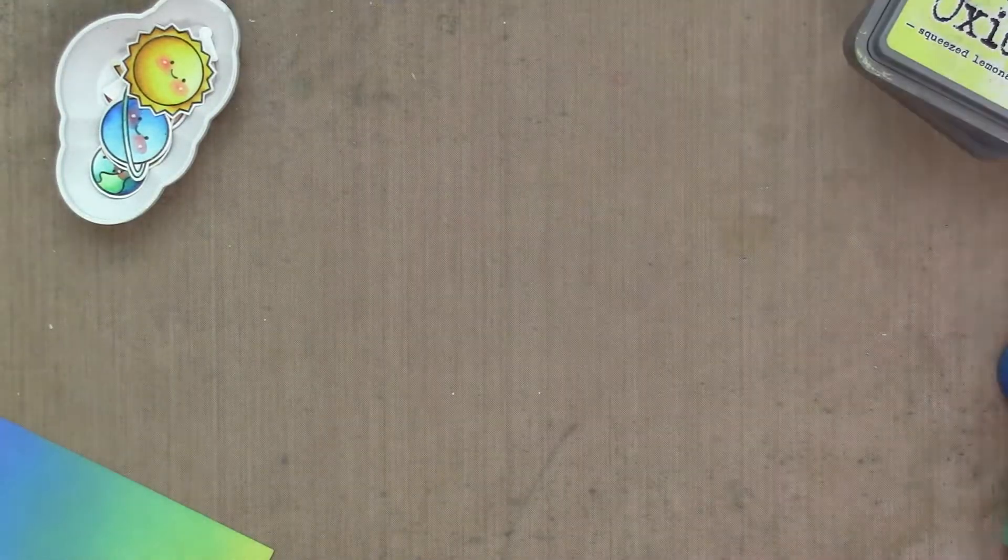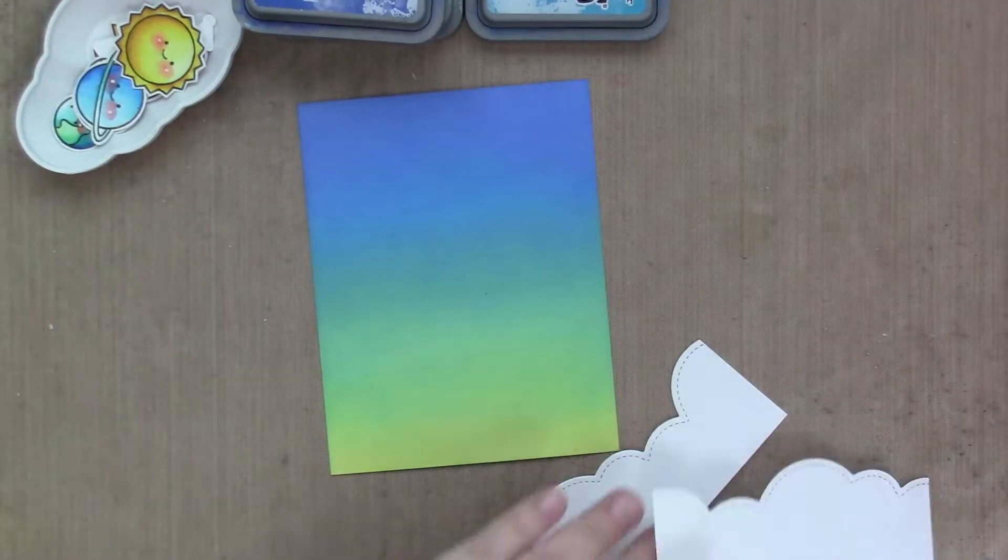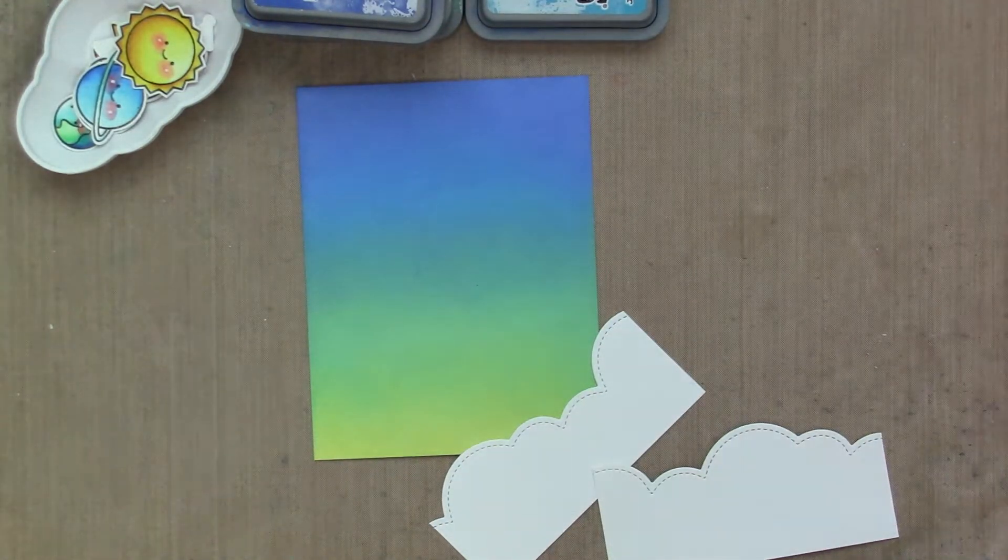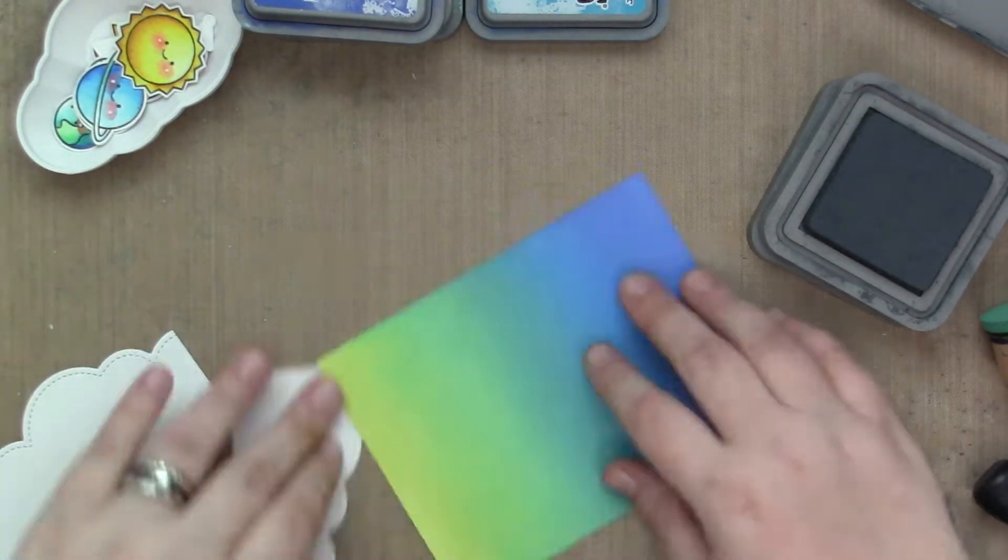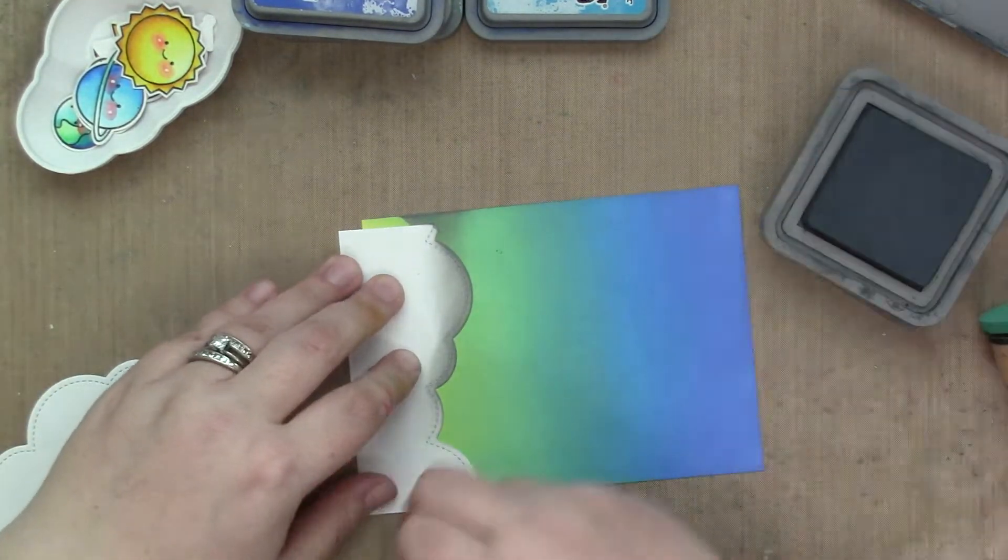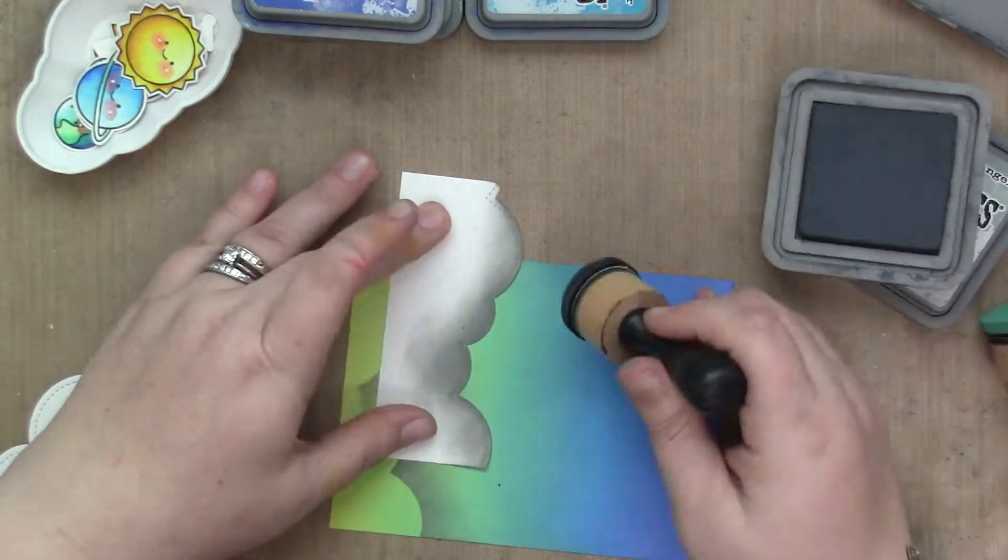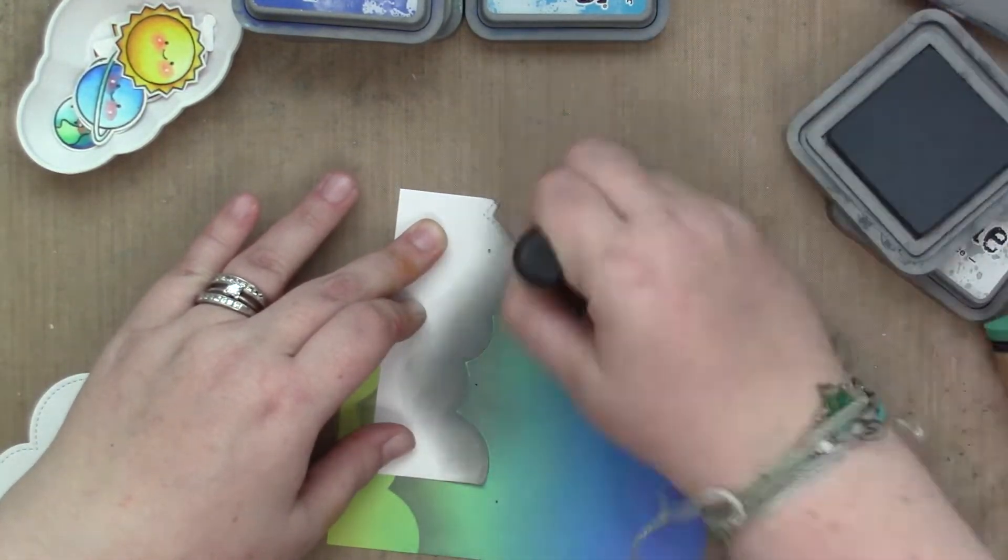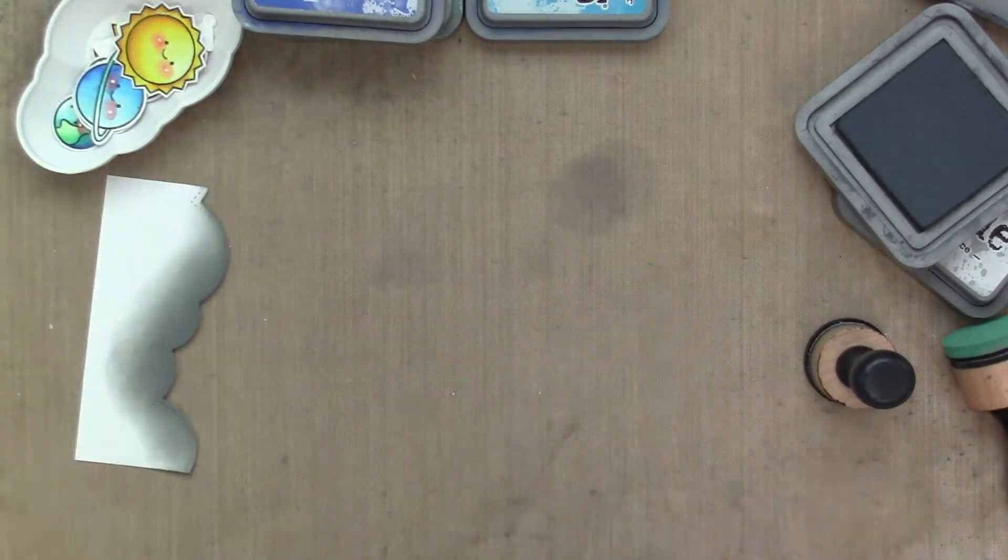So that's what I did. I used the Puffy Cloud Borders to die cut out some borders of clouds that I'm going to use as a stencil. And I'm just going to use my black soot and ink blend on top of these clouds to create the illusion of it being high in the sky or, in this case, the galaxy. Luckily, I'm not being graded on realism, because I would not pass.